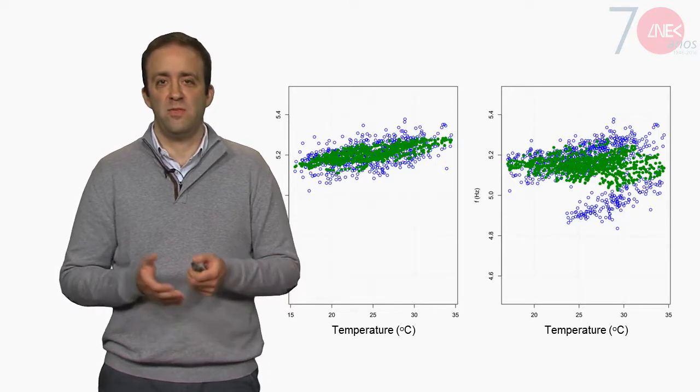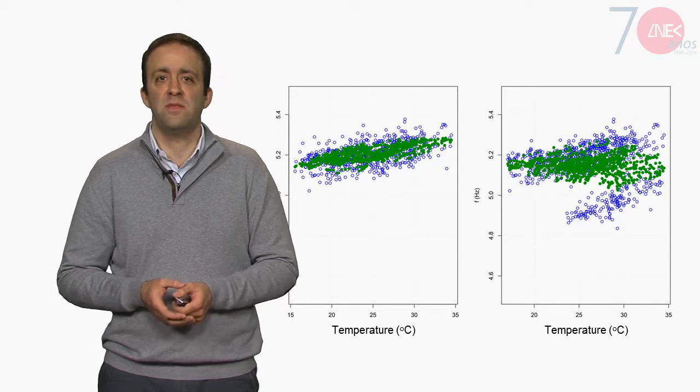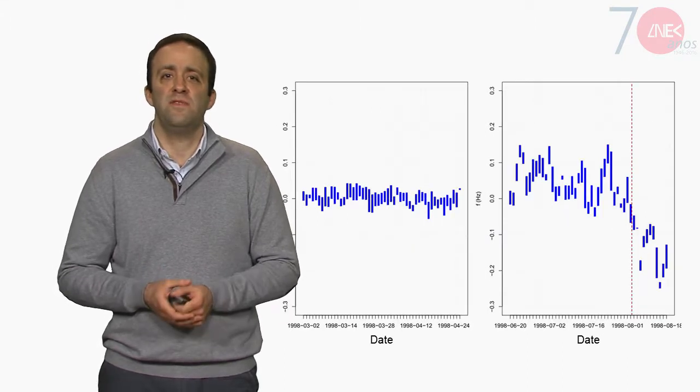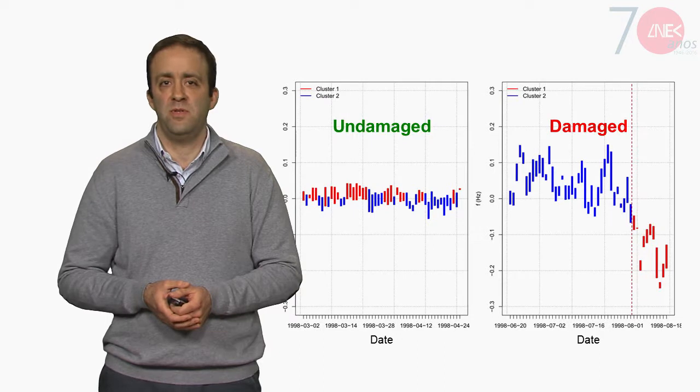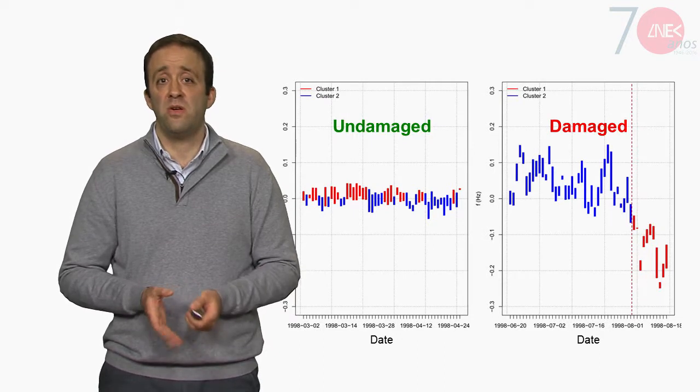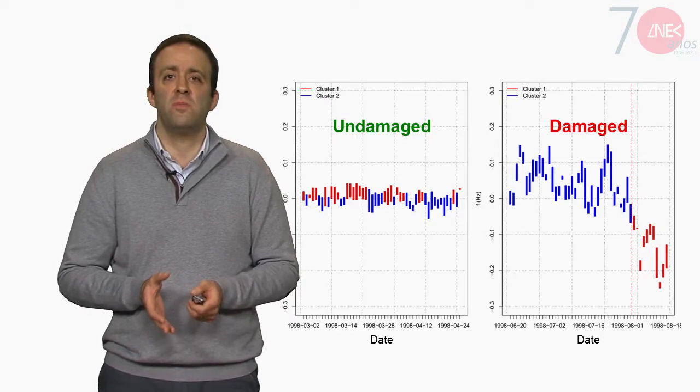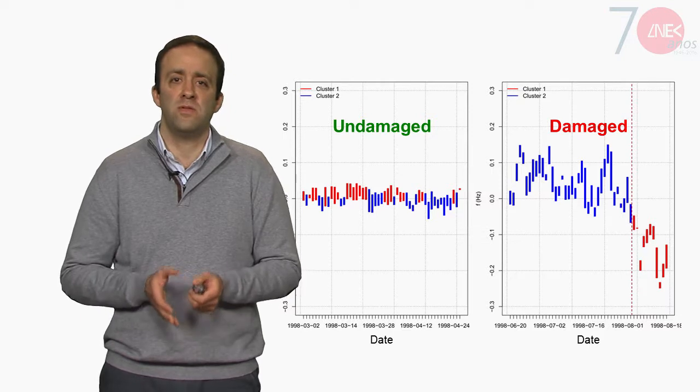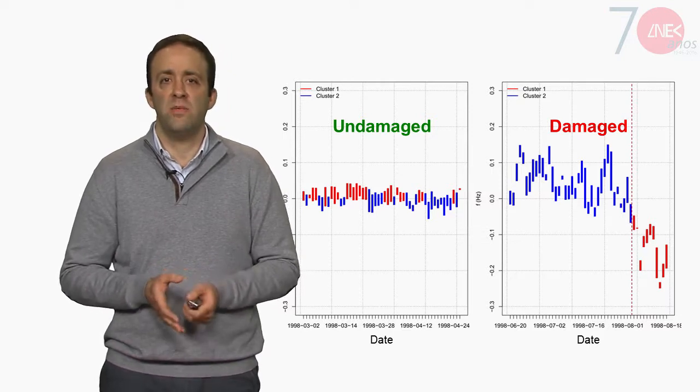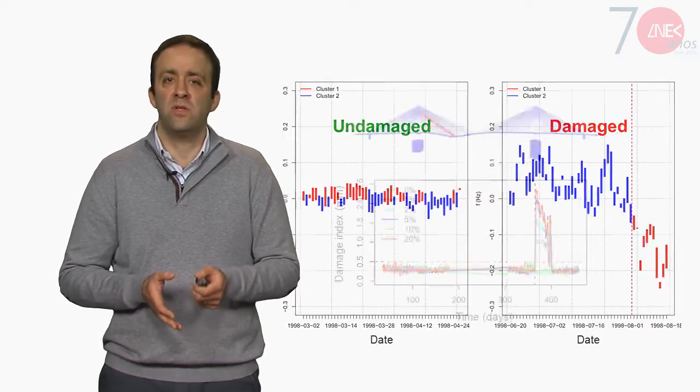Finally, these methods automatically analyze the patterns of the estimation errors to check if these are associated or not with damages. The results are very encouraging since they reveal that abnormal structural conditions that could pass unnoticed so far can now be identified automatically and in real time.